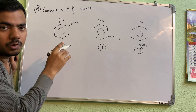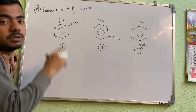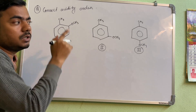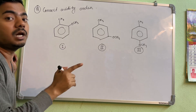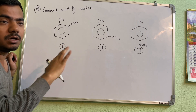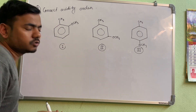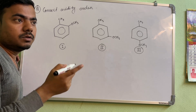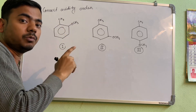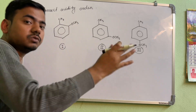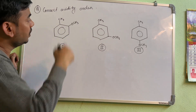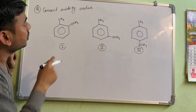Whenever they are asking acidity and have given you some compounds, what you need to do is remove one acidic proton from that structure. After that, you have to see the conjugate base stability. Once you remove the proton, you will get the conjugate base. The structure in which the conjugate base is most stable — that is the most acidic compound.